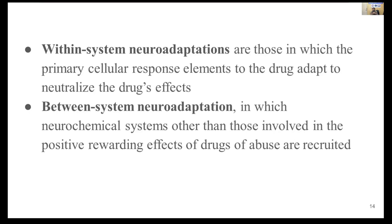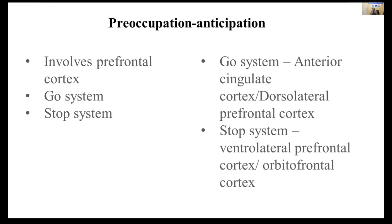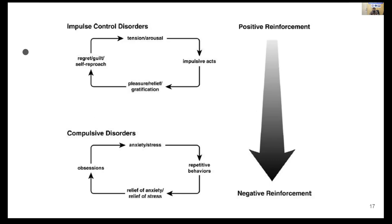The third stage is preoccupation and anticipation. It primarily involves the prefrontal cortex and has a go and stop system. The go system involves the anterior cingulate cortex and dorsolateral prefrontal cortex. The stop system is meant to reduce craving and reduce the positive expectancy of the substance, and it involves the ventrolateral prefrontal cortex and orbitofrontal cortex.